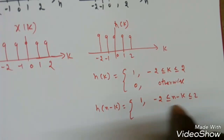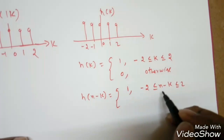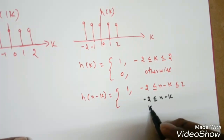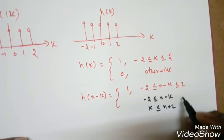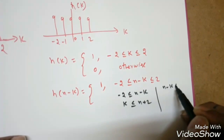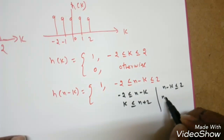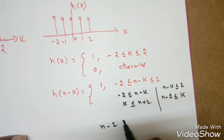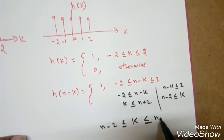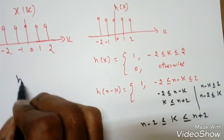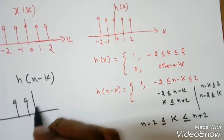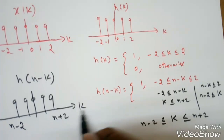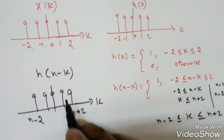For h(n−k) = 1, we need −2 ≤ n−k ≤ 2. Solving for k: from n−k ≥ −2 we get k ≤ n+2; from n−k ≤ 2 we get k ≥ n−2. So h(n−k) = 1 for n−2 ≤ k ≤ n+2, zero otherwise. x(k) spans −2 to 2 and h(n−k) spans n−2 to n+2.